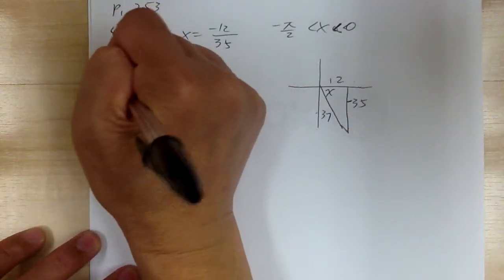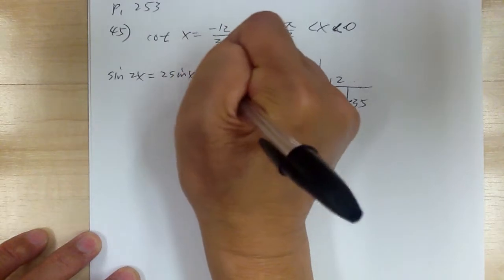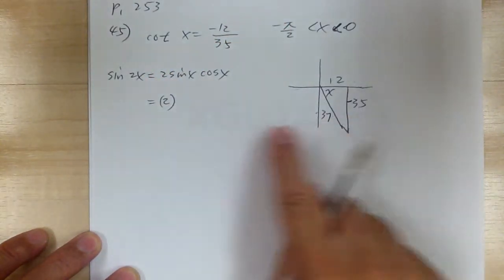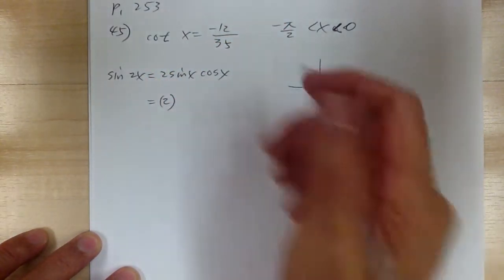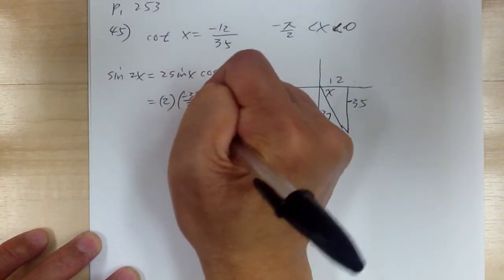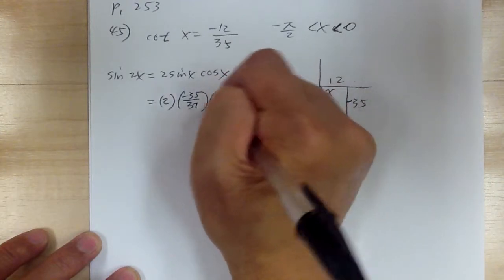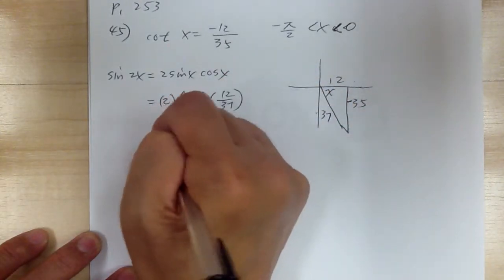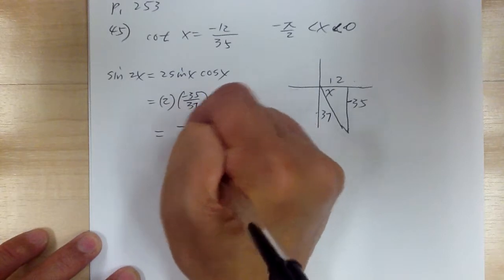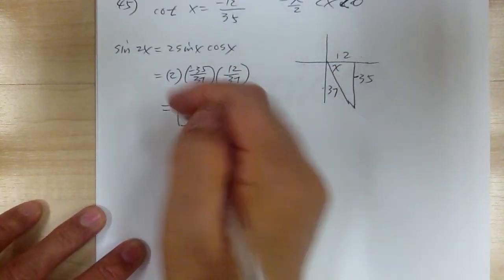Now let's do sine 2x equal to 2 sine x cosine x. This equals 2 times sine, which is negative 35 over 37, times cosine, which is 12 over 37. When you multiply out, you get negative 840 over 1369.